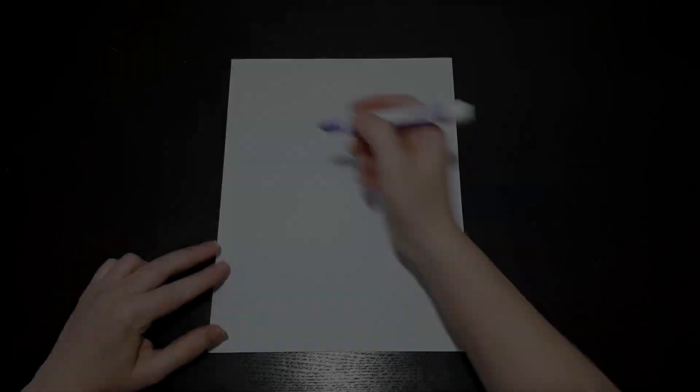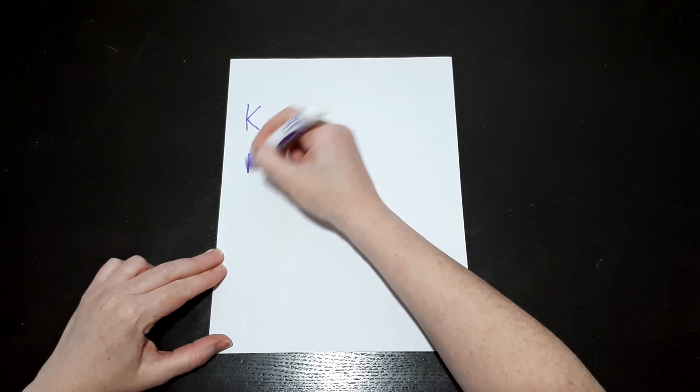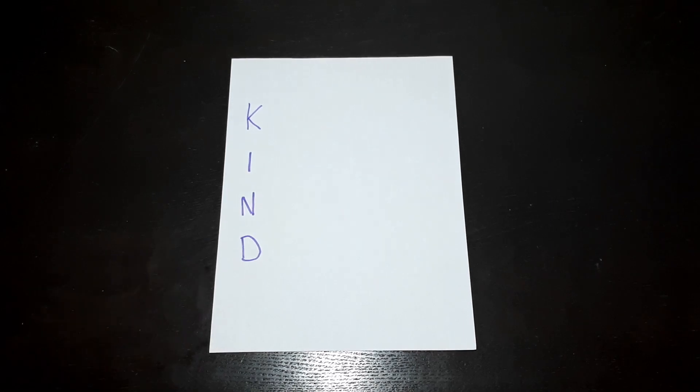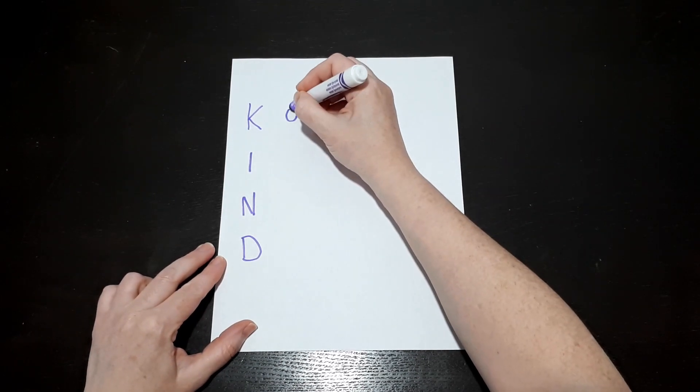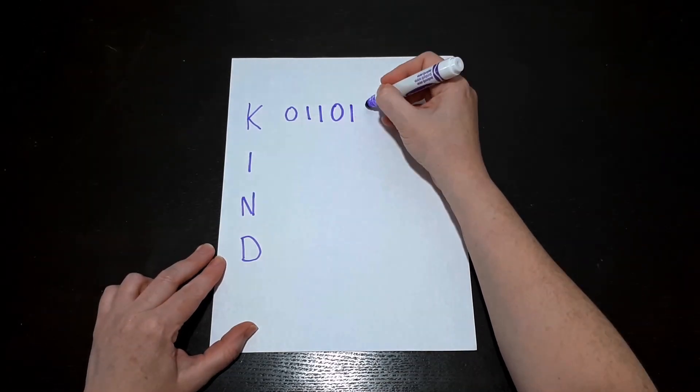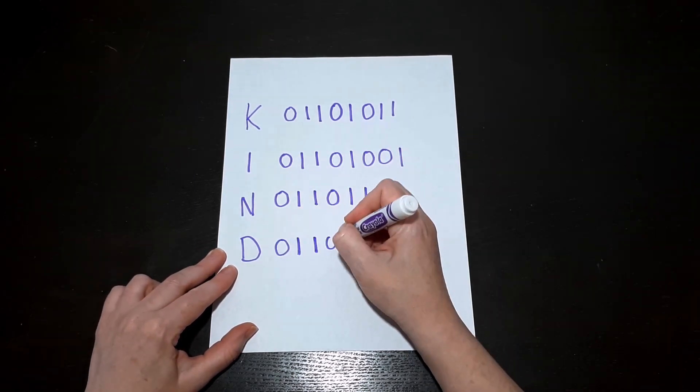Start by writing on a piece of paper the inspirational word or short message you would like to use in your bracelet. I'm using kind to remind my special person that I think they're kind. Next, use the binary code chart to write out the binary code for each of the letters. You can find a link to the binary code chart in the video description.